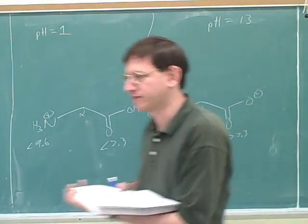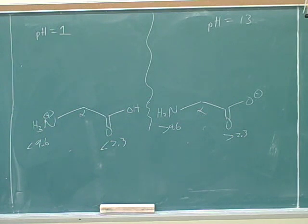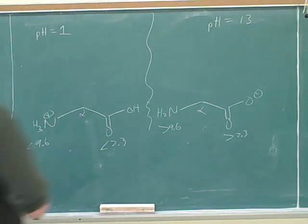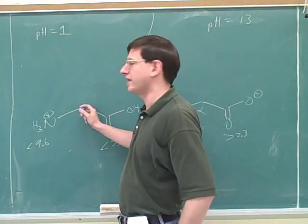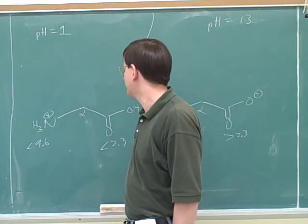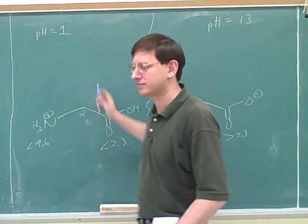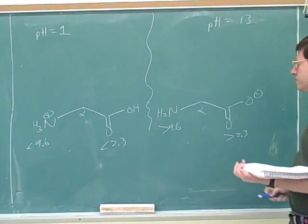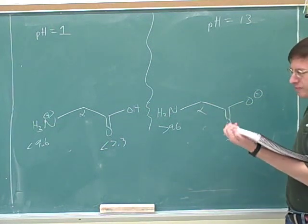So it always comes back to looking at the alpha groups. Just if you look at the top of the column here, they said pKa of the alpha carboxy and the alpha amino. Just to indicate that this is the carboxy on the alpha carbon, and this is the amino on the alpha carbon. That's how they're distinguishing them from any groups that might be on the side chain. That's just one more indication of how important it is to label the alpha carbon.